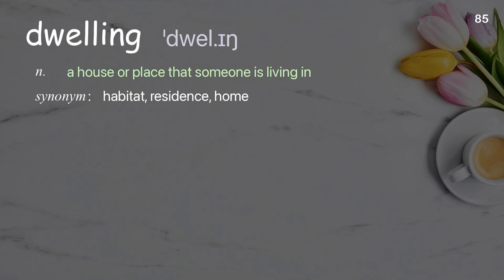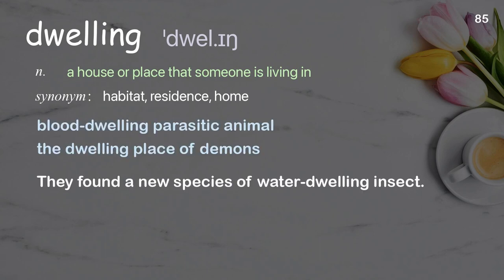Dwelling: A house or place that someone is living in. Examples: Blood-dwelling parasitic animal, The dwelling place of demons. They found a new species of water-dwelling insect.